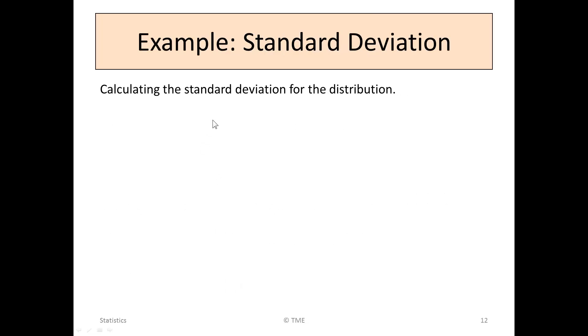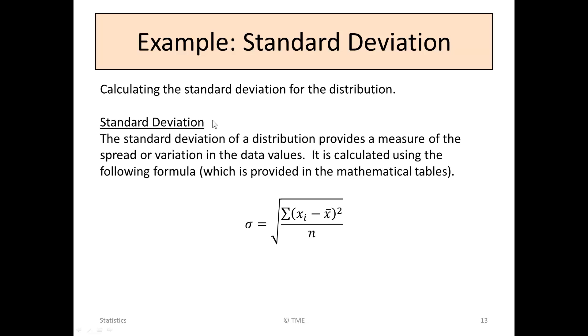Calculating the standard deviation for the distribution. The standard deviation of a distribution provides a measure of the spread or variation in the data values. It's calculated using the following formula, which is provided in the tables. So sigma is equal to the square root of the sum of xi minus x bar squared over n.